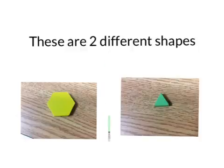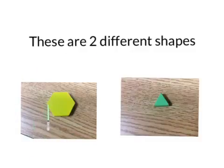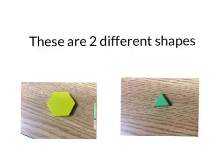This is a triangle. This is a hexagon. A hexagon has six sides, and a triangle has three sides.